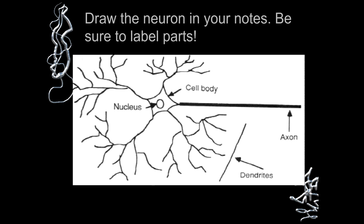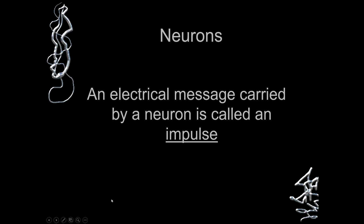That antenna is like a dendrite — it was supposed to receive a signal. And there is a guy broadcasting the telecast that is coming on your television — that is the sender, and that's called the axon. I hope you were able to make some sense out of this brief example.